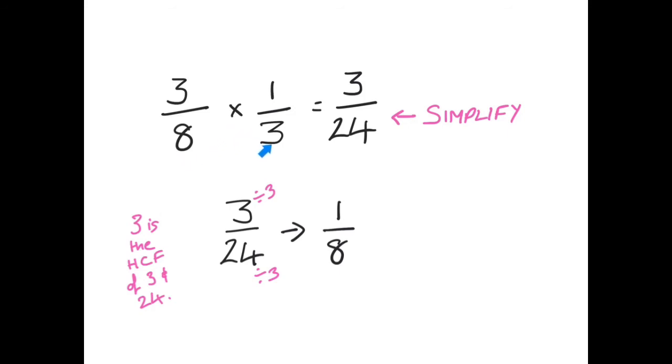I have three eighths multiplied by one third. I am finding a third of a group, which is three eighths. So three multiplied by one is three. Eight multiplied by three is twenty-four. And this answer needs to be simplified. So three is the highest common factor of three and twenty-four. So I divide both by three. Three divided by three is one. Twenty-four divided by three is eight. And this answer is now in its simplest terms.